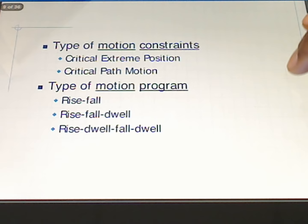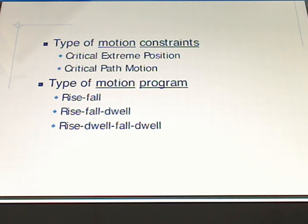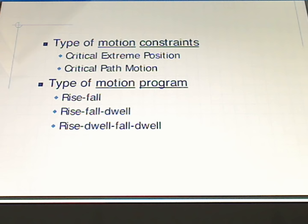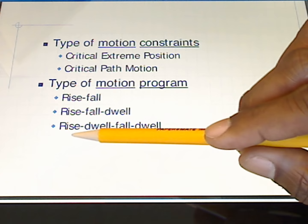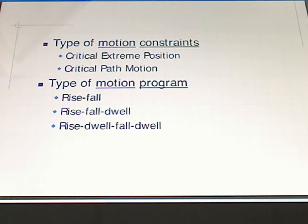We can also classify cams by the type of motion constraints — critical extreme positions and critical path motion. We'll start with critical extreme position motion constraints as they are easier to work with. We also have the type of motion program: a rise and a fall for the follower, or a rise, fall, and dwell — where the follower remains at a position — or combinations like rise-dwell and fall-dwell. For those familiar with car engines, think of a piston rising, falling, dwelling, or going through various combinations of these motions.